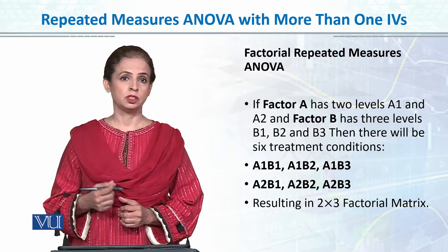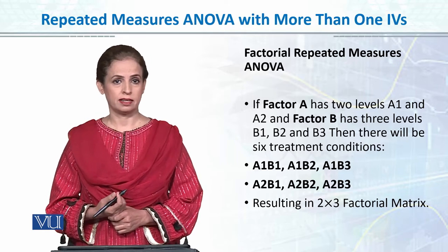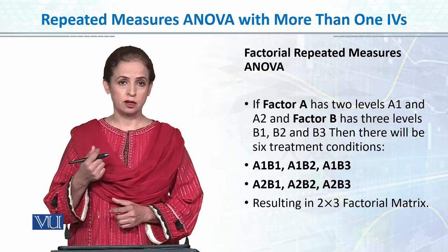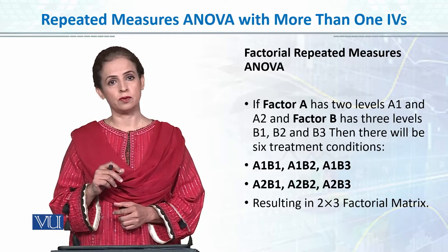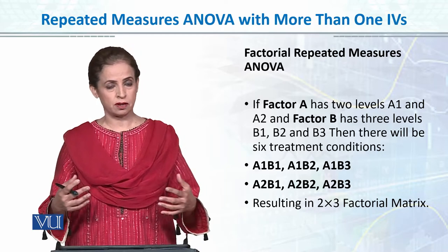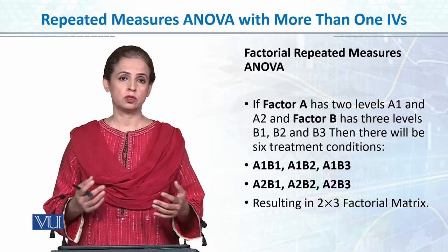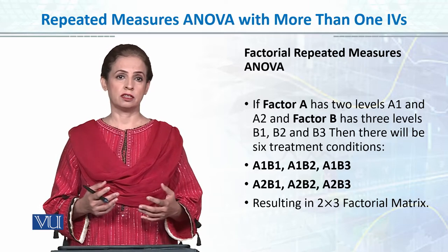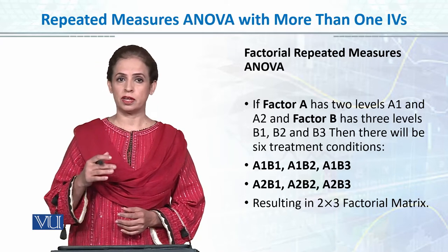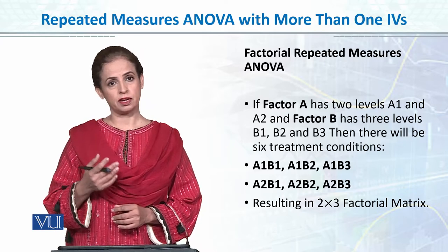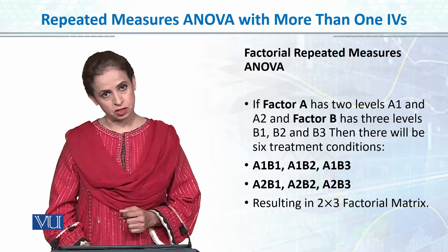We always remember that whether we are talking about one-way ANOVA, repeated or independent, or two-way ANOVA with more than one independent variable, our dependent variable will always be one. If we increase dependent variables, we are heading into multivariate analysis, which is not covered at the BS level. In factorial ANOVA, we can increase the number of independent variables and their levels, but the dependent variable will always be one.